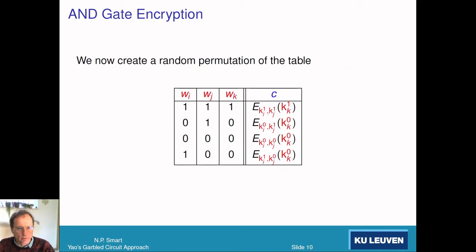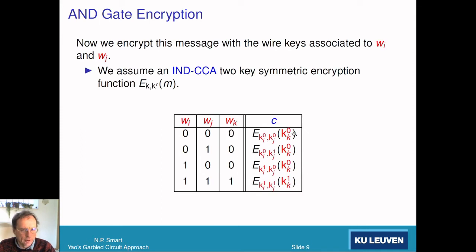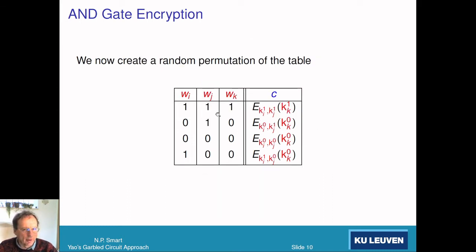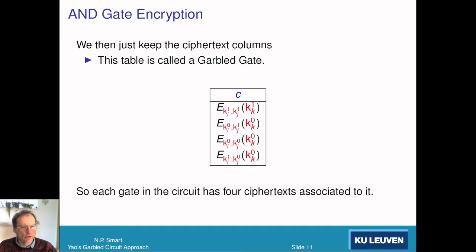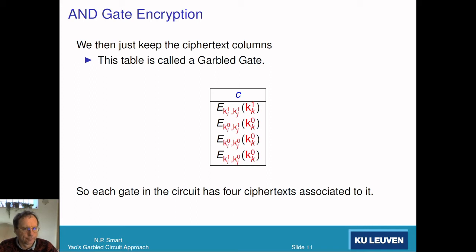There's a problem: if we just publish these four ciphertexts in order, you know which ciphertext corresponds to which row, revealing information. So the next step is to permute the rows in a random way — the same rows but in a different random order. Then we throw away all other information and keep just these permuted encryptions. These encryptions produced from the truth table in a permuted manner are what is called a garbled gate. Each gate in the circuit has essentially four ciphertexts associated to it, so for every gate we do four encryptions — and that's how we encrypt the circuit.